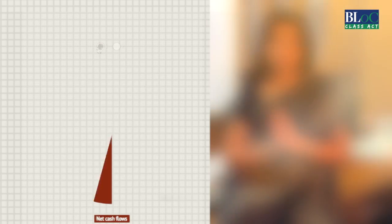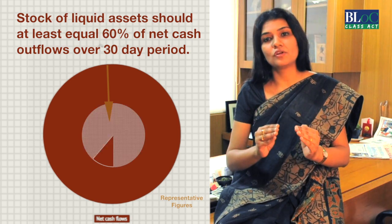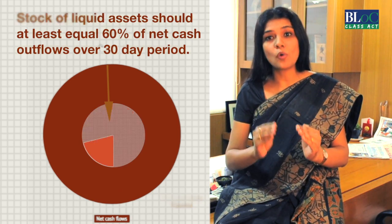From January 2015, the RBI has introduced a new concept, the liquidity coverage ratio, commonly known as the LCR. This has been set out by the Basel Committee, which is a regulatory framework for the banking system. The main objective of LCR is to ensure that banks have sufficient liquid assets to meet their payment obligations in a 30-day stress scenario. According to the LCR requirements, banks need to maintain liquid assets at least 60% of their net cash flows over a 30-day period. This will be gradually increased to 100% by 2019.